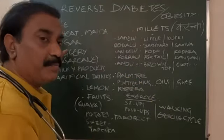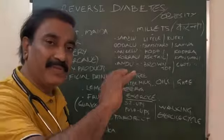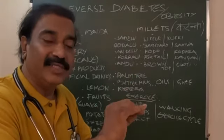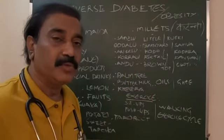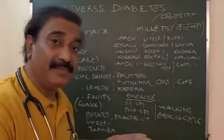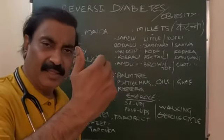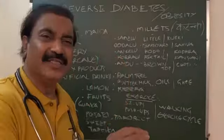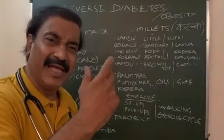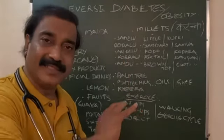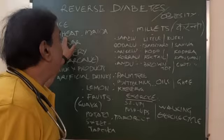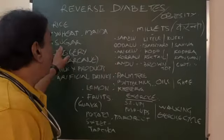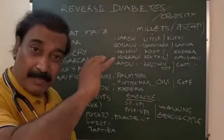Number one: completely avoid rice in your diet. In any form — no rice. Maybe brown, maybe hand-pounded, black, red — whatever rice, avoid rice completely. Avoid wheat completely. Avoid maida completely. Avoid sugar completely.